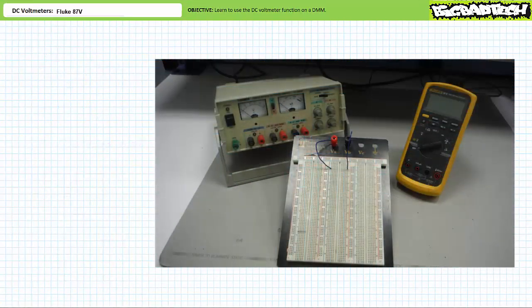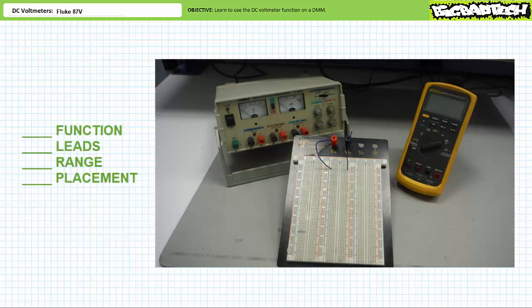Let's use the DMM in DC voltmeter mode to measure voltage in a real-world circuit. To do so, we need to use the checklist. I'm not urging you to use this checklist every time — I'm demanding you use this checklist every time. This checklist will save your measurement equipment and circuit a lot of costly downtime, and may potentially save your life. Use the checklist. Take your time and think before you act. The checklist is four steps. Follow them one through four and you will get it right every single time. Skip a step, do a step wrong, or do a step out of order, and you will get it wrong every single time. Function. Leads. Range. Placement.